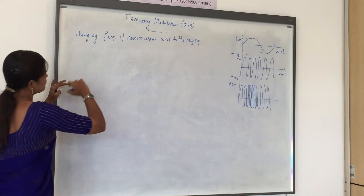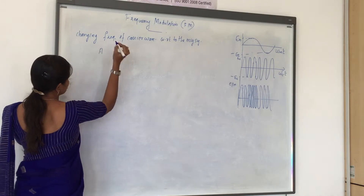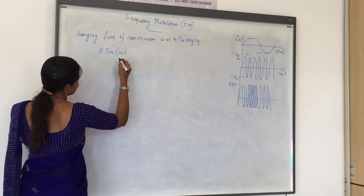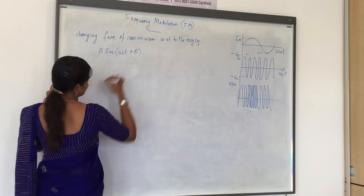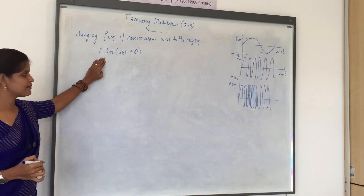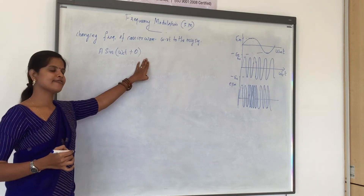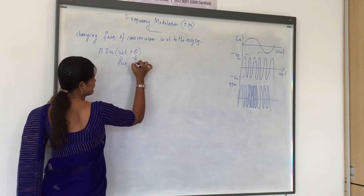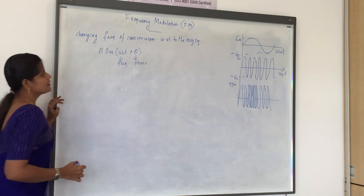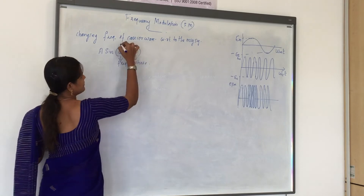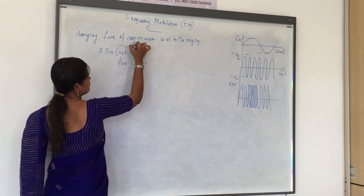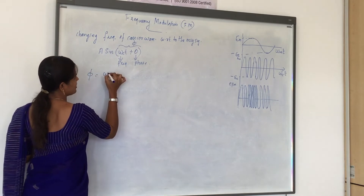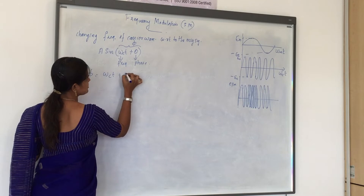Let's take a waveform or a mathematical representation of a waveform: A sin(ωct + θ). Here A is amplitude, ωc is frequency, and θ is phase. We can mark this entire term as phi. So phi is equal to ωct + θ.